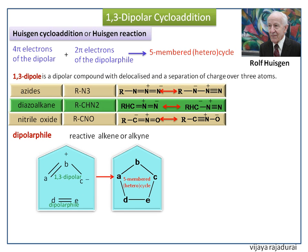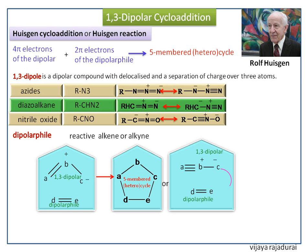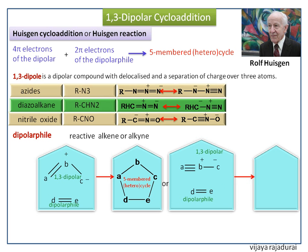This is the linear or propargyl-type 1,3-dipolar compound. It reacts with the dipolarophile and gives a 5-membered heterocyclic compound. So, the addition of a 1,3-dipolar compound with the dipolarophile to give a 5-membered heterocyclic compound is known as the 1,3-dipolar cycloaddition reaction.